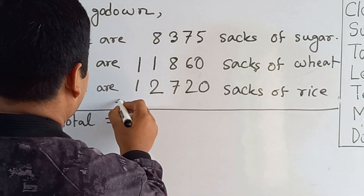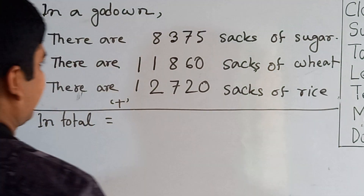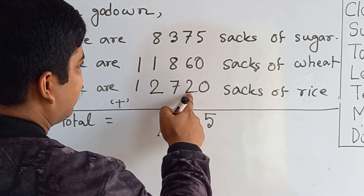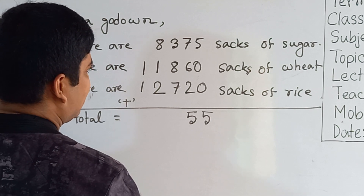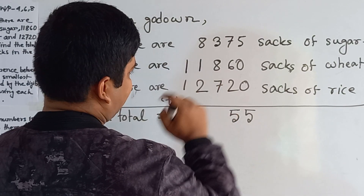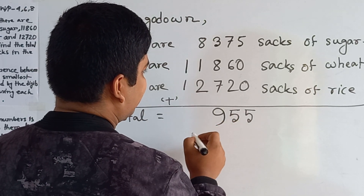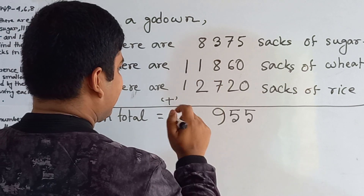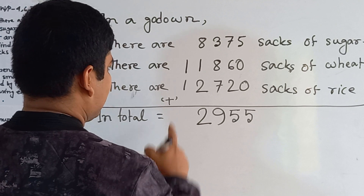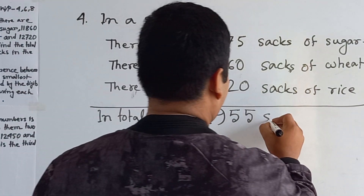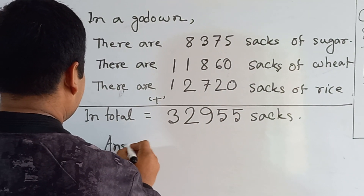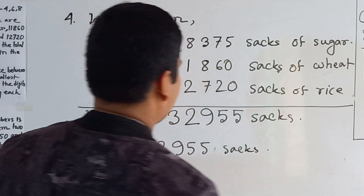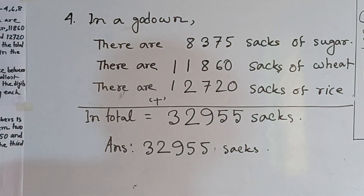To find the total, we do addition. 5 plus 0 plus 0 equals 5 — no carrying. 7 plus 6 is 13, plus 2 is 15 — write 5, carry 1. That 1 added with 8 gives 9, plus 1 is 10, plus 2 is 12 — write 2, carry 1. 1 plus 1 is 2, plus 1 is 3, then 8. So the answer is 32,955 sacks in the go-down.